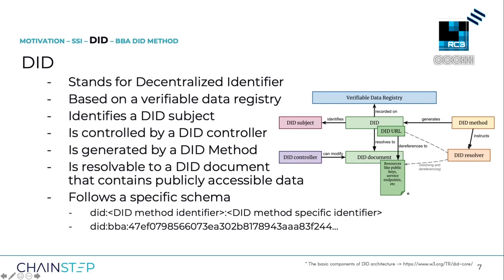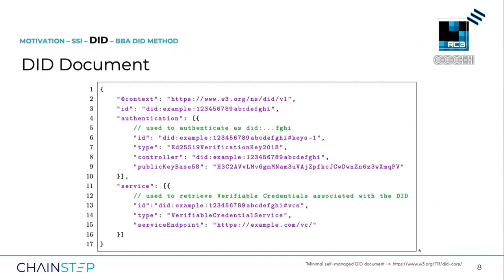A DID is always generated by a DID method and follows the generic DID schema. The schema always starts with the prefix 'did', followed by a DID method identifier, followed by a DID method-specific identifier. The BBA method schema, for example, contains the prefix 'did', followed by the BLOBA DID method identifier 'bba', followed by a BLOBA DID method-specific string. A DID document may contain a link to a schema that provides information on how to interpret the DID document fields, and in most cases also contains public keys for specific contexts and service endpoints for further interactions.